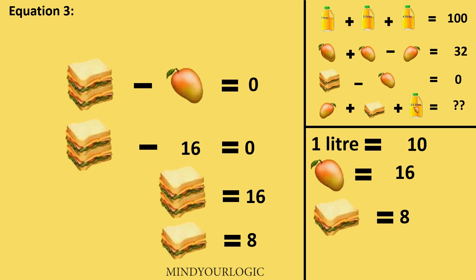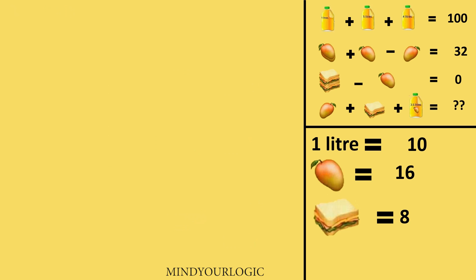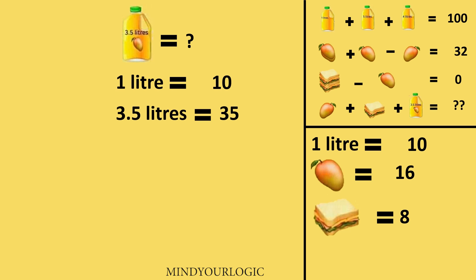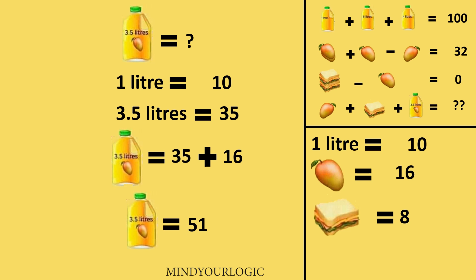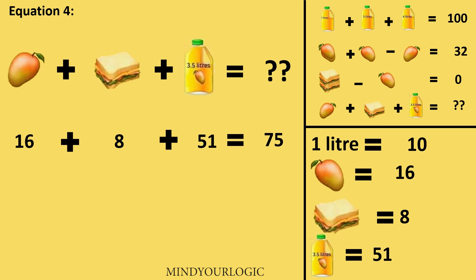Now let's move to the final equation. In the final equation, I have 3.5 litres of mango juice plus a mango. Since 1 litre of mango juice is 10, 3.5 litres will be 35. Adding the mango gives 35 plus 16, that is 51. Putting all the values in the equation, I get 16 plus 8 plus 51, that is 75.